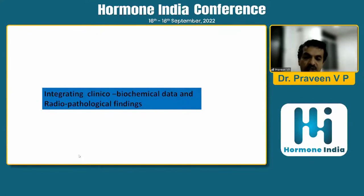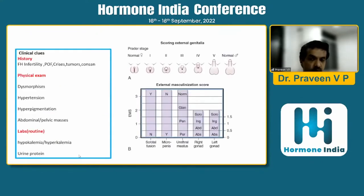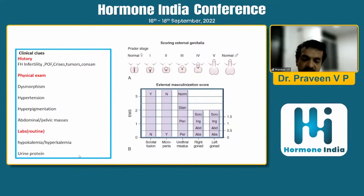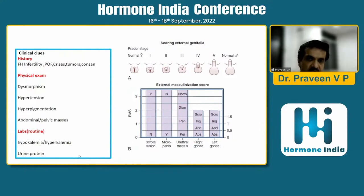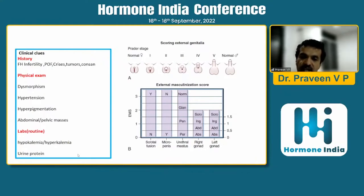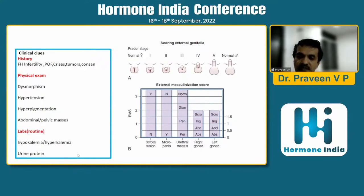Let's go into some case scenarios. Before that, it's important to take a good history and perform a good physical examination. There may be clues from history — for example, premature ovarian failure or female infertility, which may pertain to SF1 mutations or even partial androgen insensitivity. Hypertension may be important for some congenital adrenal hyperplasias; hypokalemia and hyperkalemia are associated with various CAH defects. Urine protein and creatinine are important in conditions like WT1 mutations.